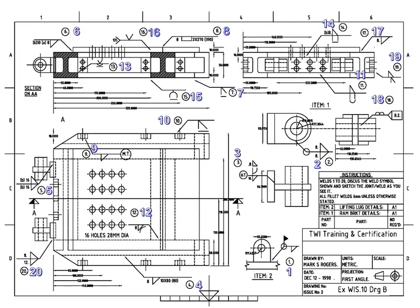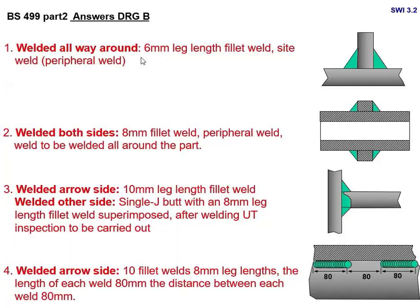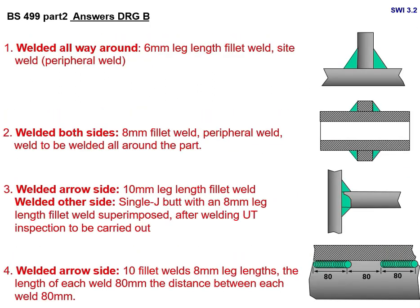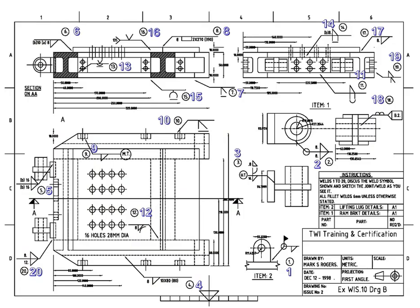Joint number 16: welded other side — single V-butt, 12 mm, welded using the MAG welding process. You can see process number 135 or 195 indicated on the drawing — 135/195 refers to MAG welding. So joint 16 specifies the MAG welding process.